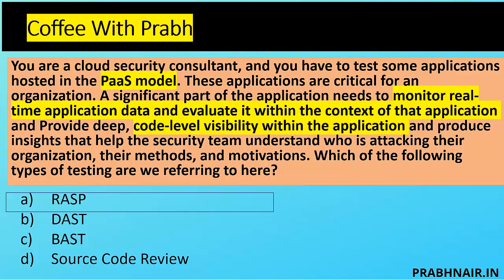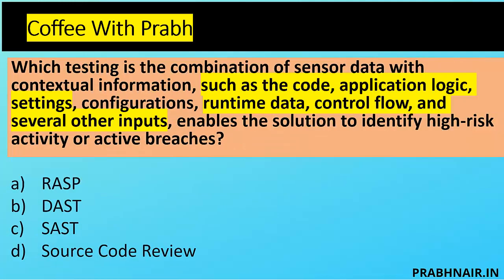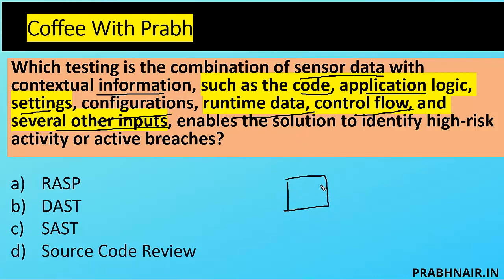Next question: Which testing combines sensor data with contextual information such as code, application logic, settings, configuration, runtime data, control flow, and several other inputs to enable a solution to identify high-risk activity or activity breaches? As explained, we have a plugin integrated with the application and an external interface to see activity happening in the application. In SAST, we identify bugs in the code just by reviewing the code without executing the application.